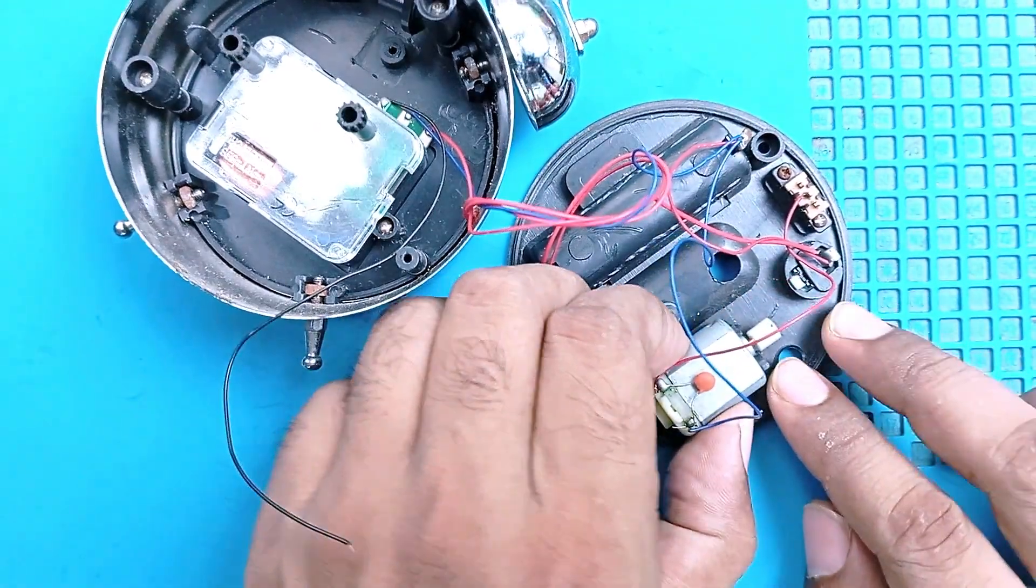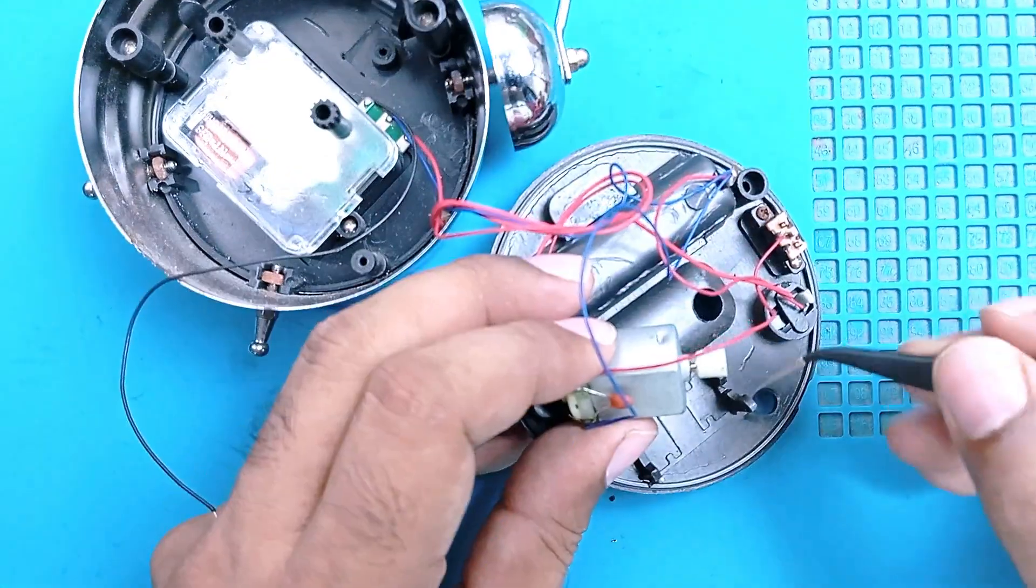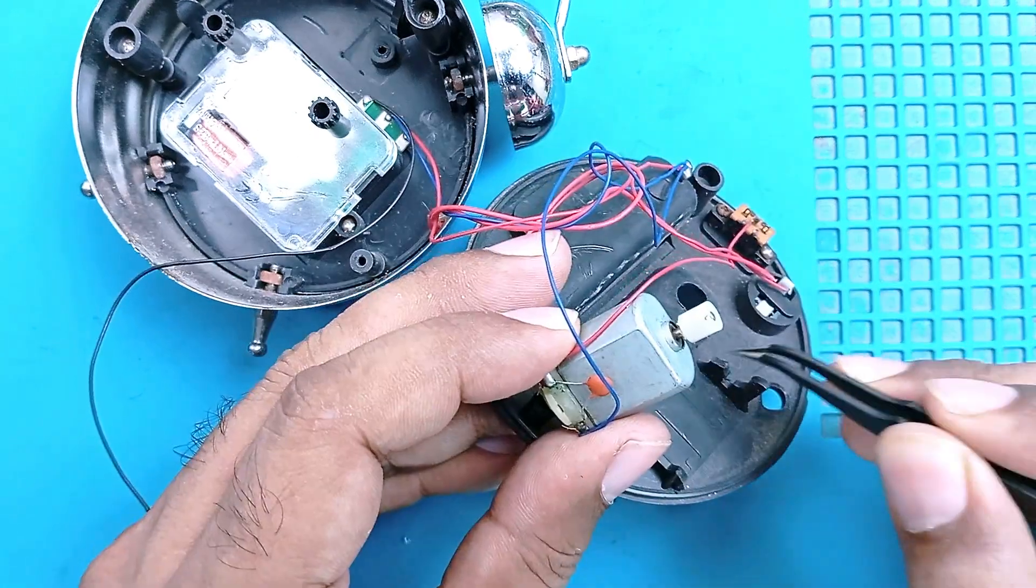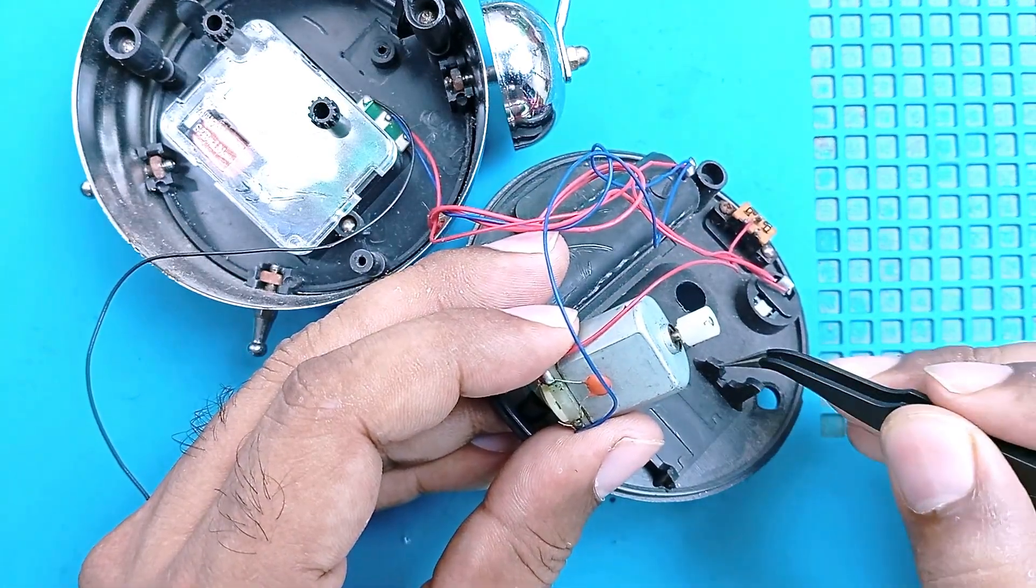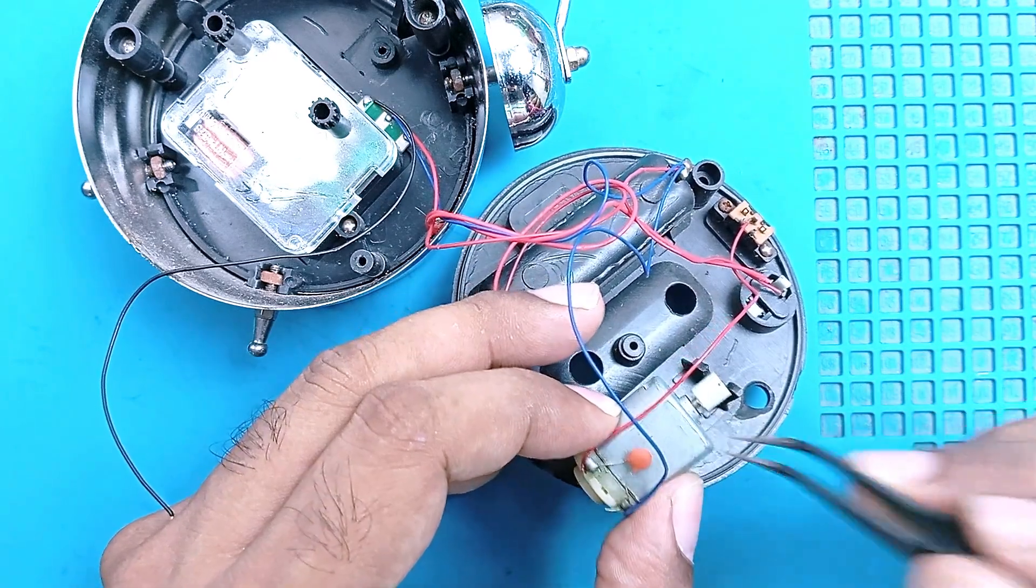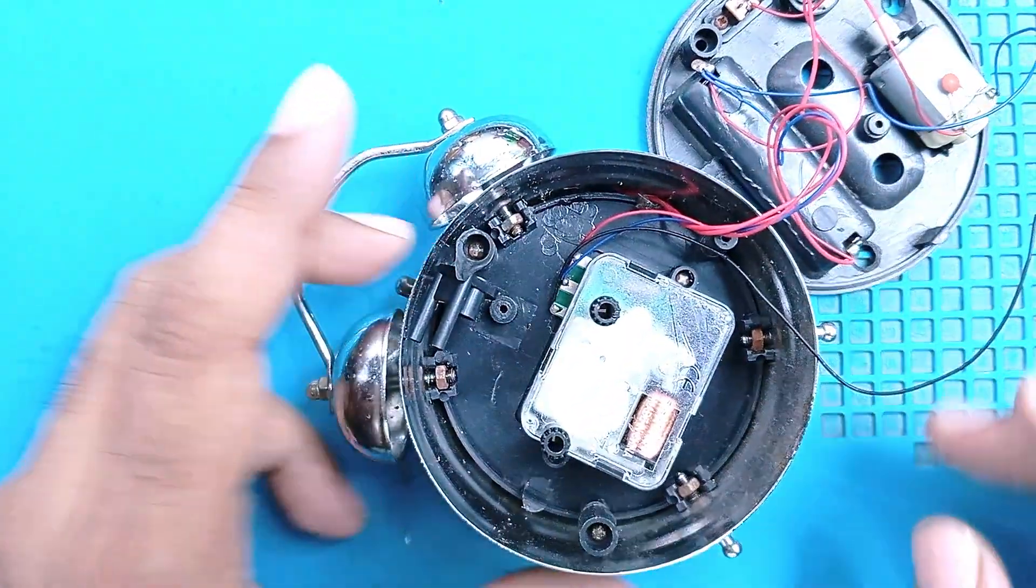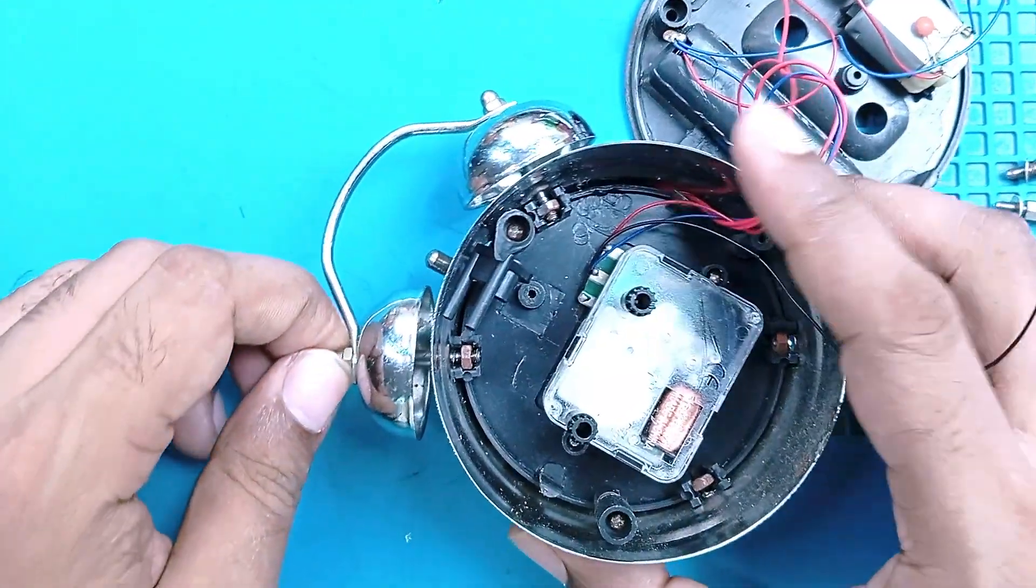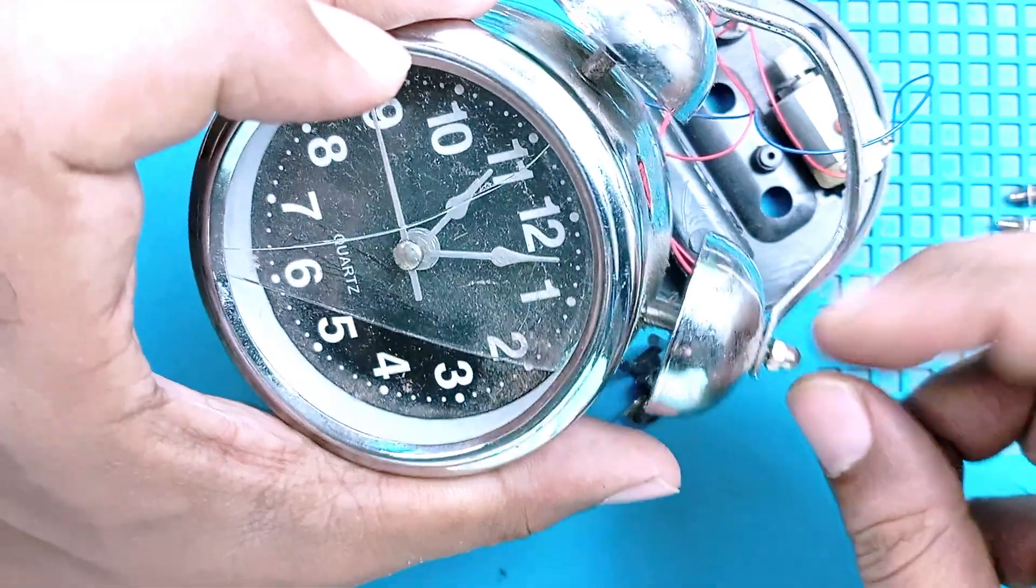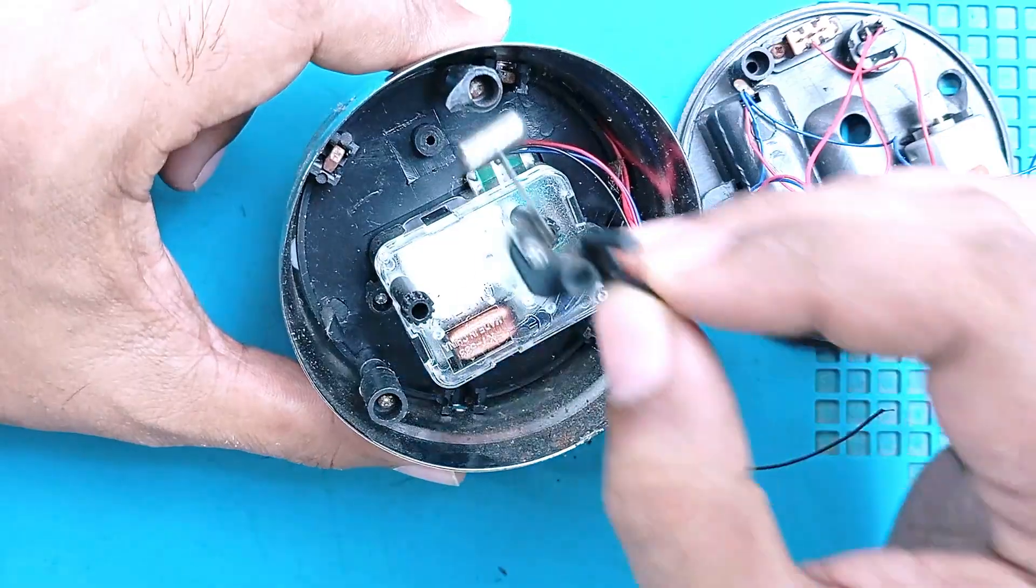It has another part here, something like this, but this arm is broken so it cannot hold this motor properly. Now my main job is to open the leg because I have to remove this broken glass. And if I open this, then I can install this hammer easily.